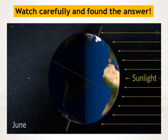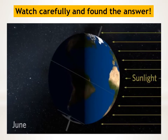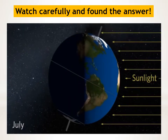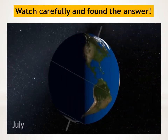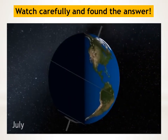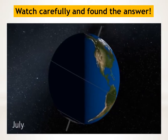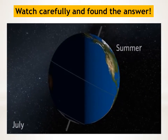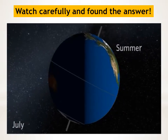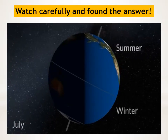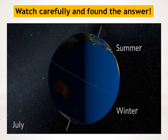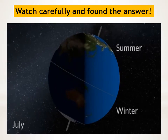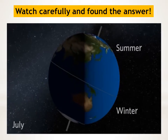Compared to winter, summer days are warmer and the Sun stays in the sky much longer. Notice too that while it's summer in the northern hemisphere, it's winter in the southern hemisphere. Because of Earth's tilt, the seasons are reversed.